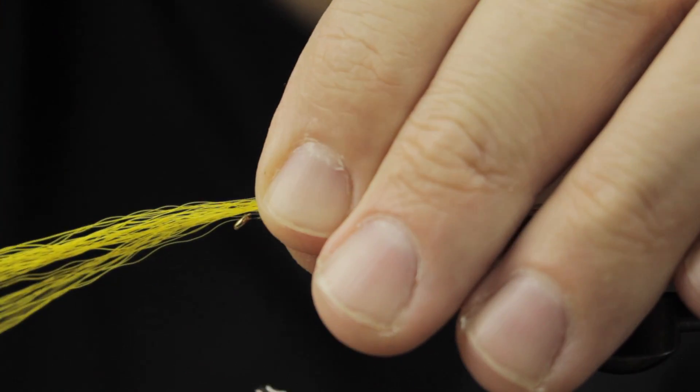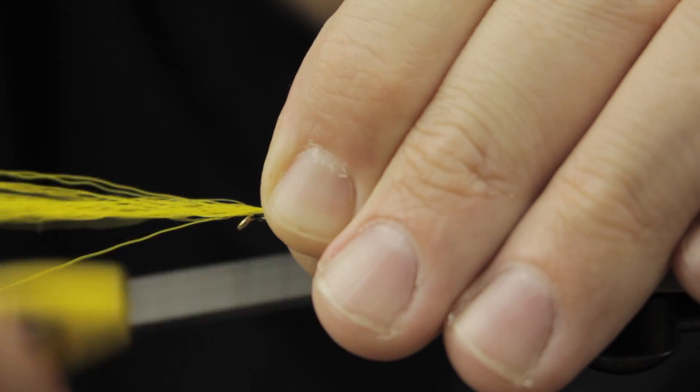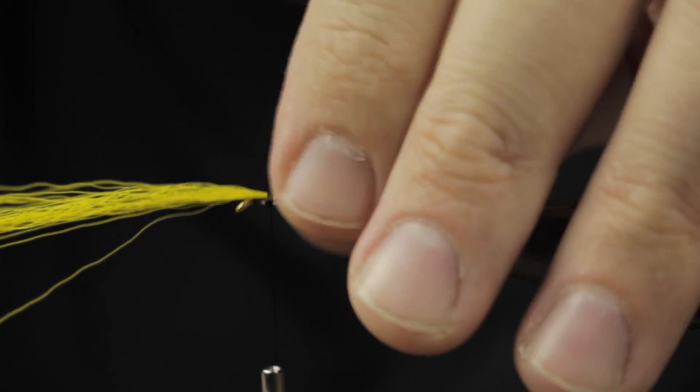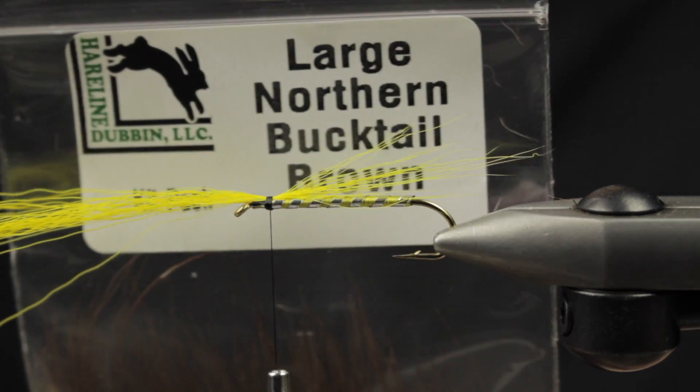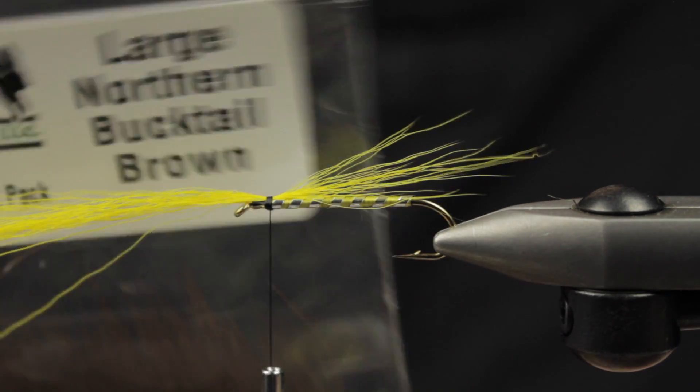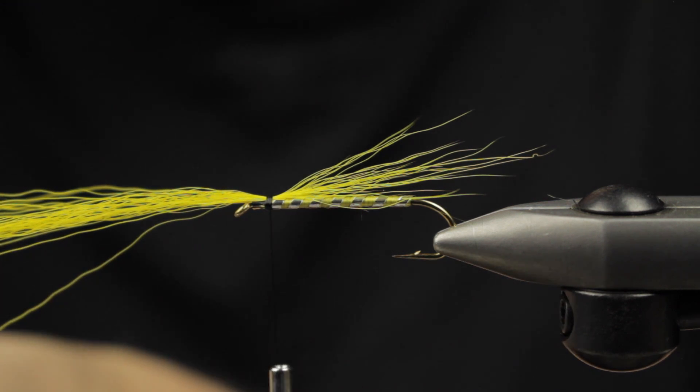A little taper never really hurts, so I'll do a few securing wraps there. I'm going to leave all the bucktail coming out as we move into a brown bucktail, so this will be like a stacked wing—a multicolored wing.